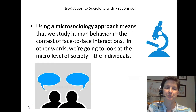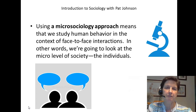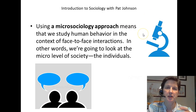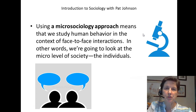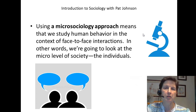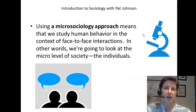The term micro sociology means that when we study human behavior we look at face-to-face interactions. A microscope is something that zooms in on the smallness of something — we use a microscope to study something that's really tiny. So when a sociologist uses micro sociology, he or she is going to look at small interactions, like two people or a small group, focusing on individuals versus the whole society.